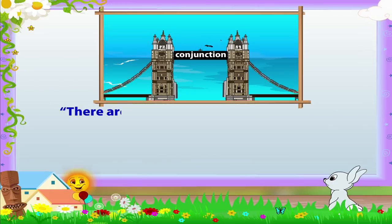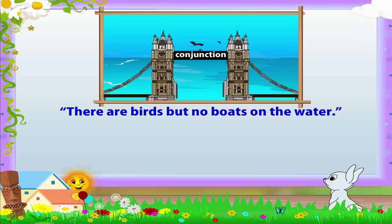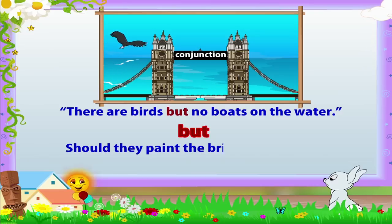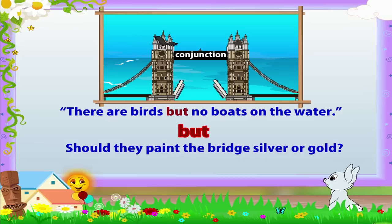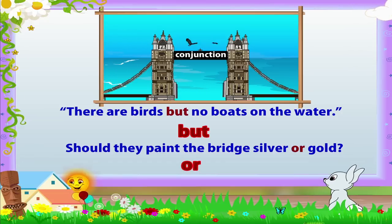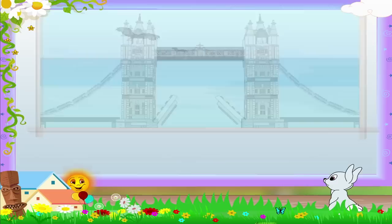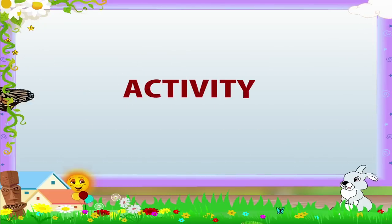There are birds but no boats on the water. In this sentence, Rainbow, the joining word is 'but.' Should they paint the bridge silver or gold? Here, Rainbow, the conjunction is 'or.' We use 'or' to show that there are two things, but we can choose only one of the two things.